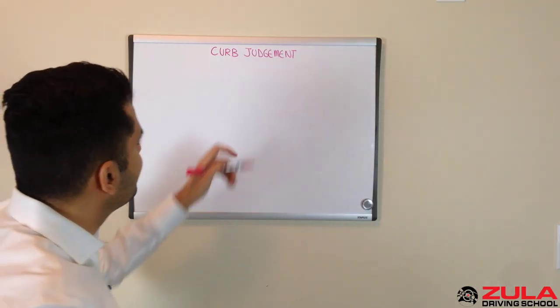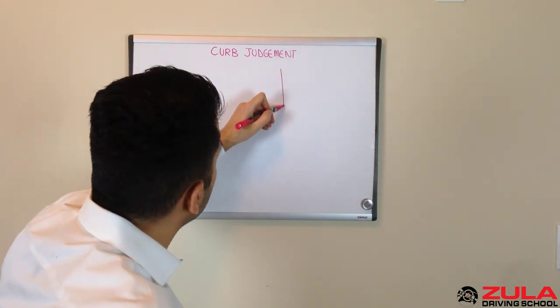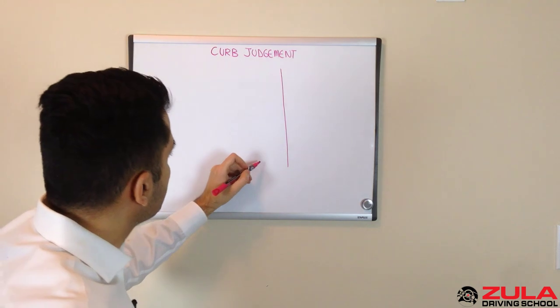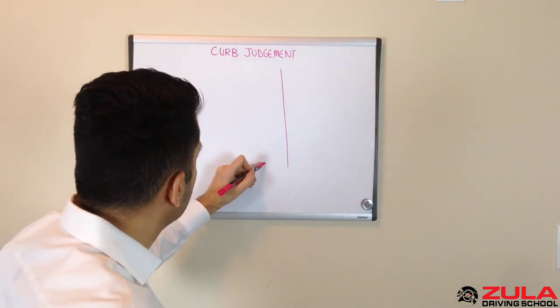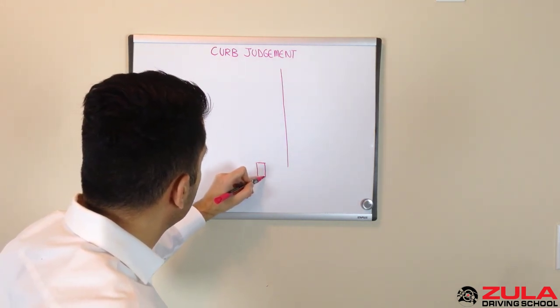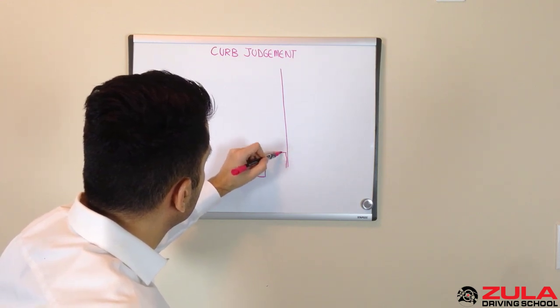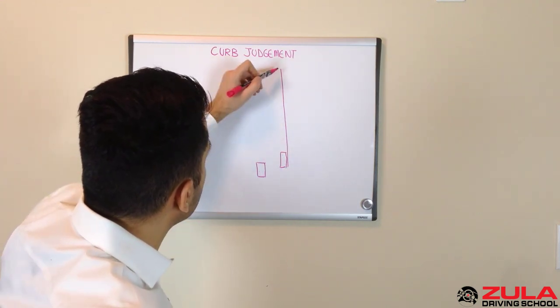Alright, curb judgment. This refers to how you can avoid hitting the curb as you're pulling up beside a curb. So let's say you're driving down a road and you want to pull over to the side of the curb.